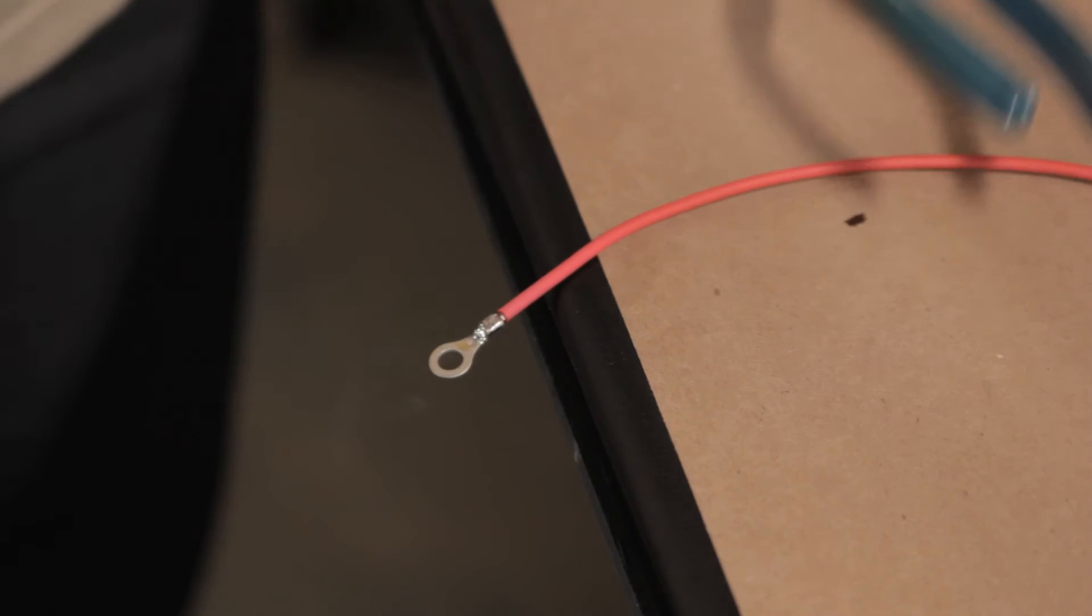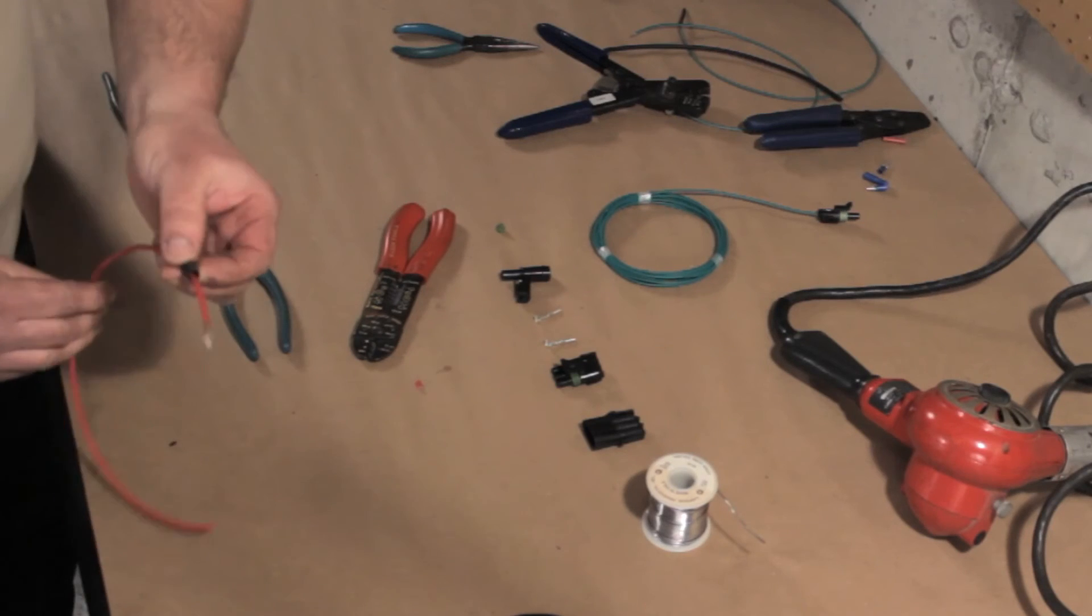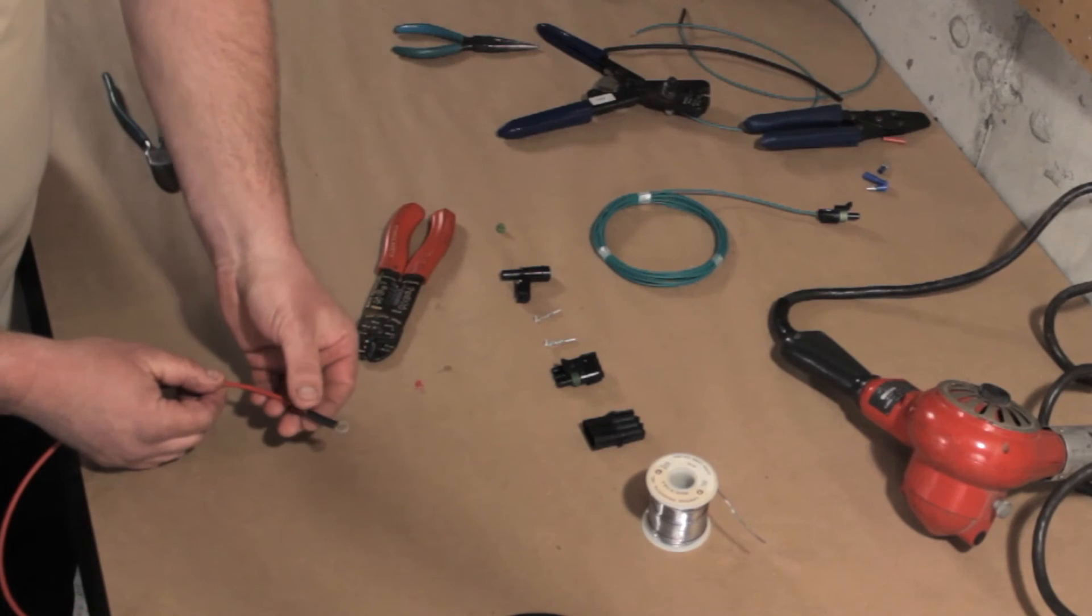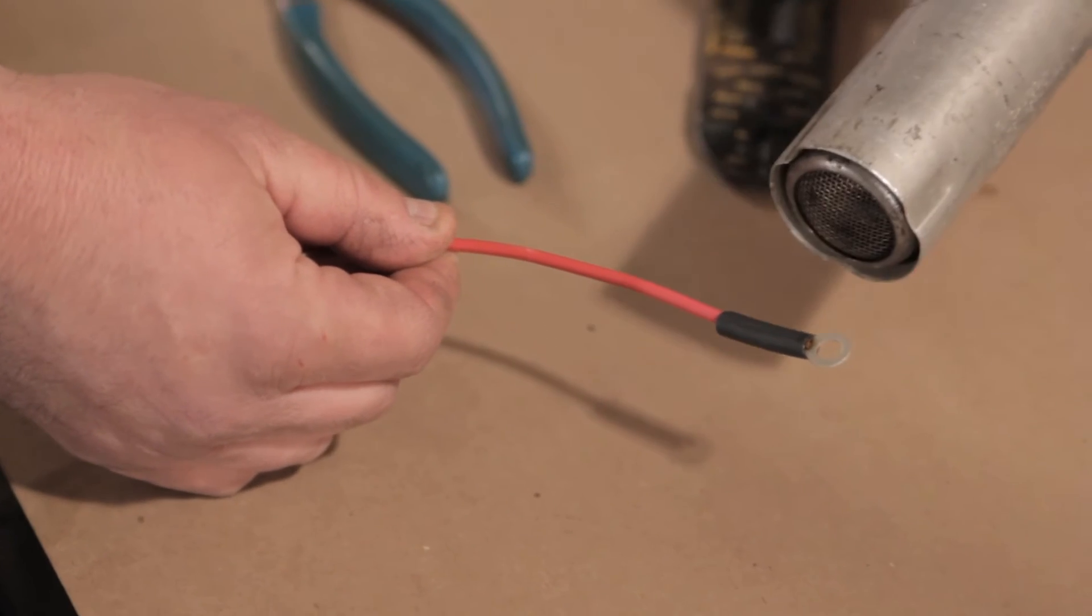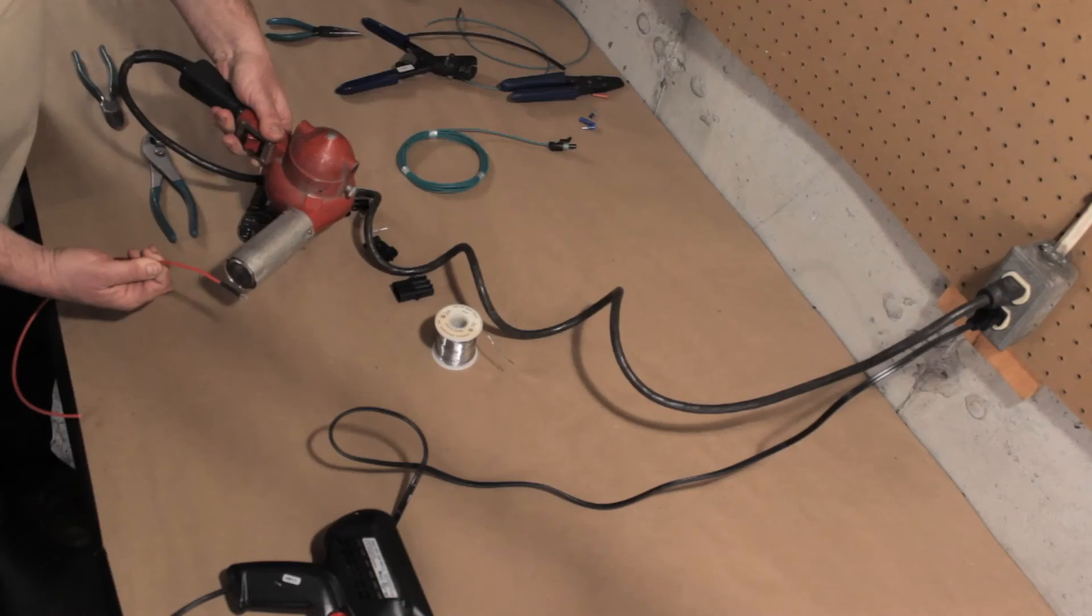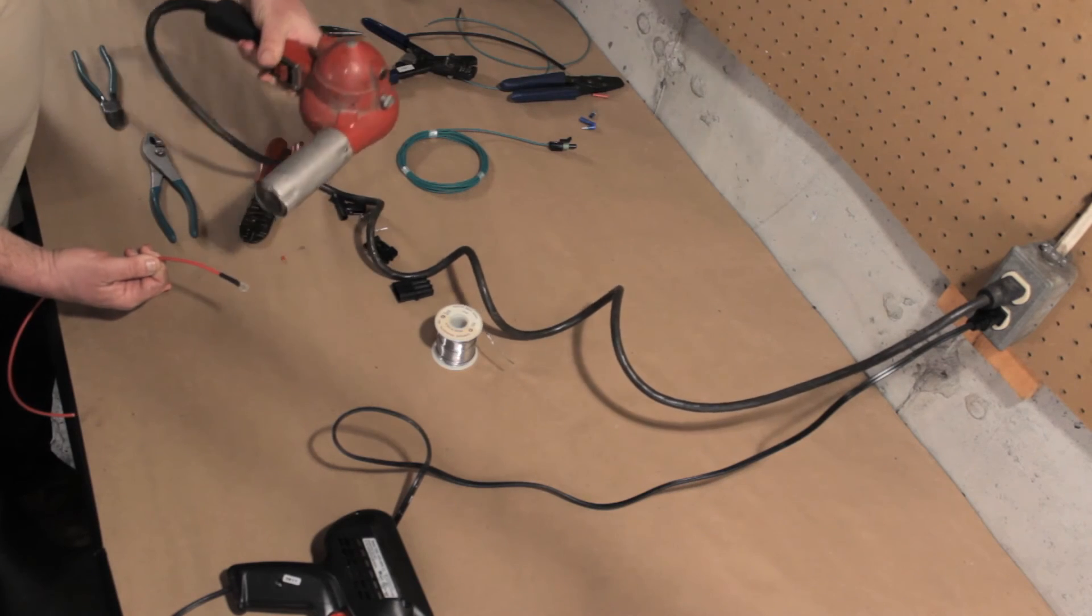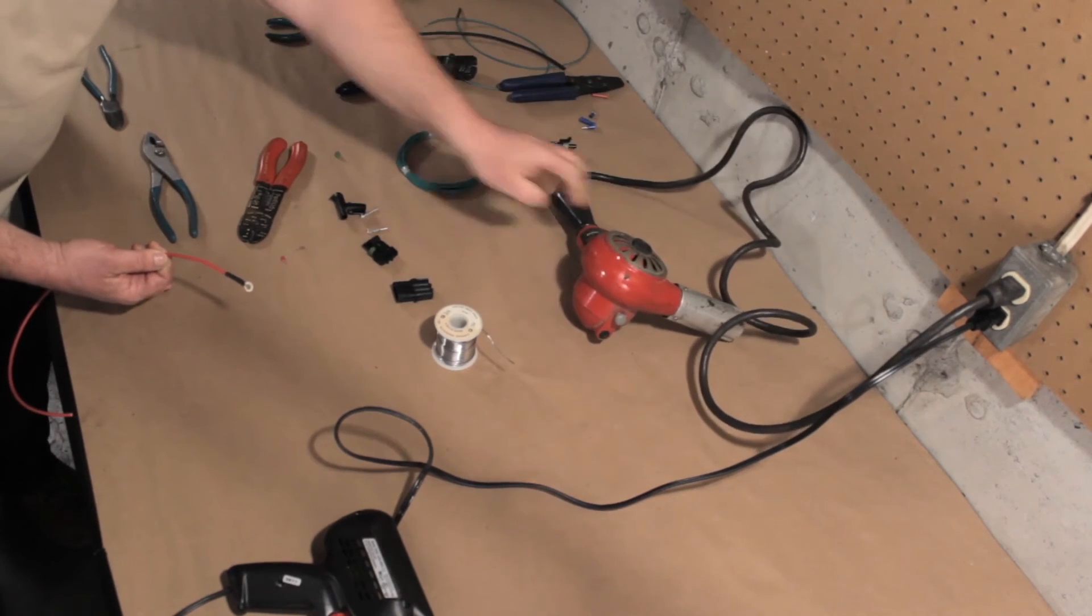Let it cool. Slide your heat shrink on. That's your insulator now. And shrink it. And there you go. That will never corrode.